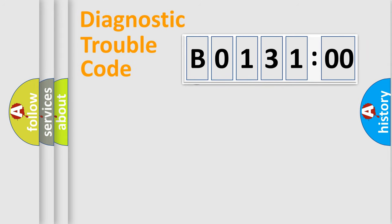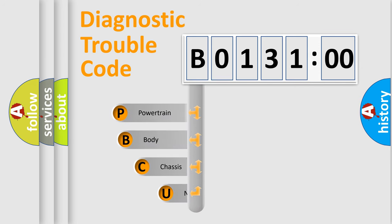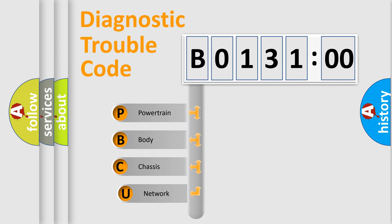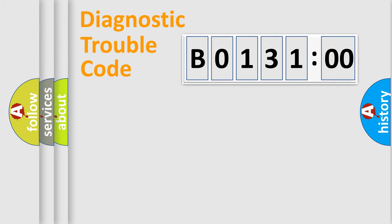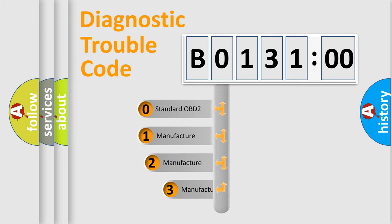First, let's look at the history of diagnostic fault code composition according to the OBD2 protocol, which is unified for all automakers since 2000. We divide the electric system of an automobile into four basic units: Powertrain, Body, Chassis, and Network. This distribution is defined in the first character of the code.